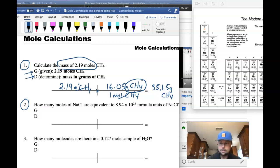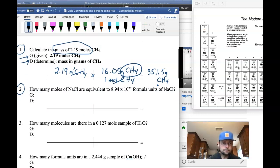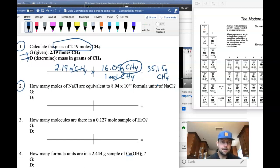So each problem is going to look similar. Sometimes there are more steps. In problem 2, it looks like instead of being given the number of grams or being asked for the number of grams, we're actually given the number of formula units right here, 8.94 times 10 to the 22nd. And think of formula units as like a molecule except for ionic compounds, we just call them formula units. And what we're trying to determine is the moles of NaCl.